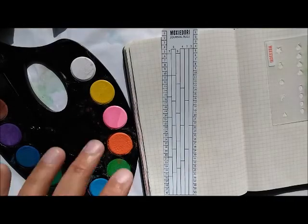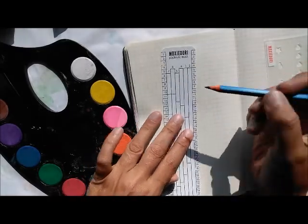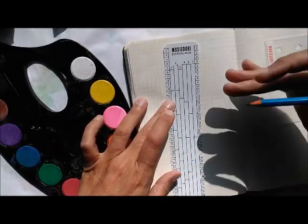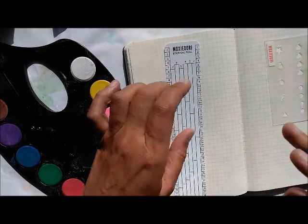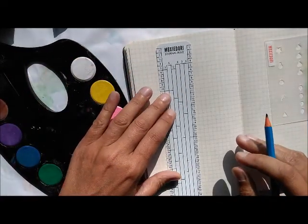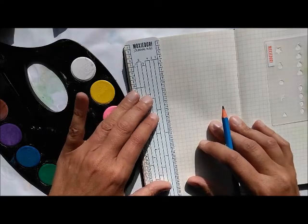I'm going to start this layout using our journal rule, which is something we do already have in the shop. And what I want to do is I want to split my page into four rows. And I could measure and count, but I don't need to do that anymore because I'm using this journal rule.